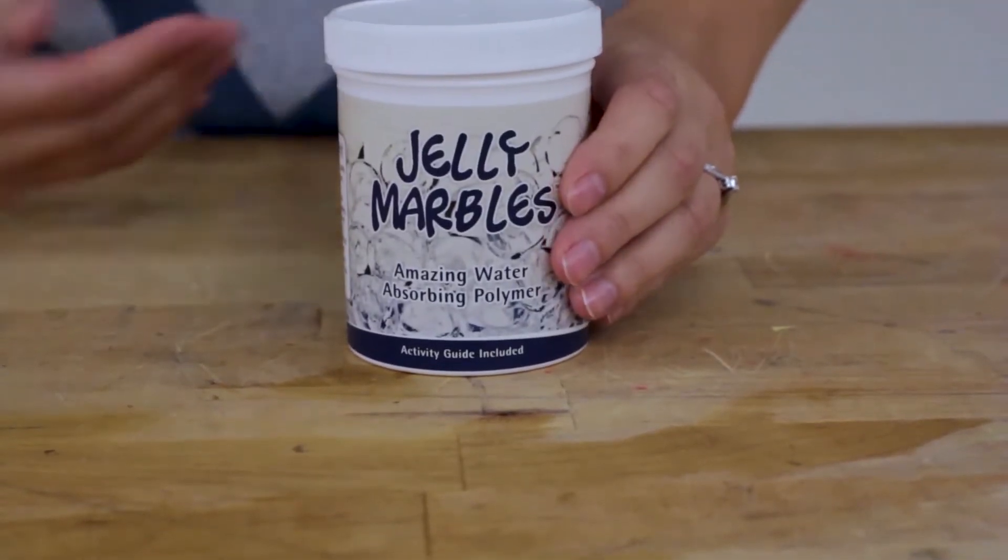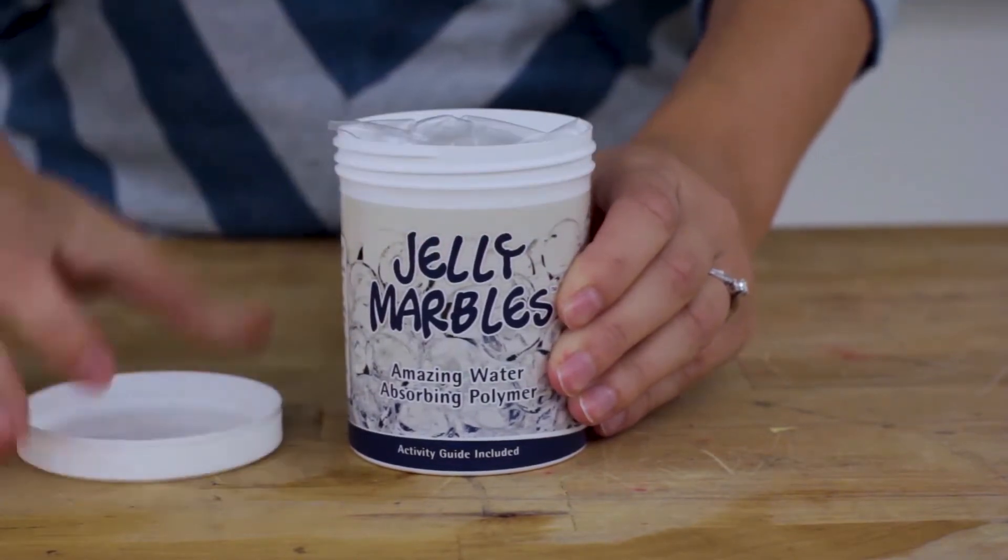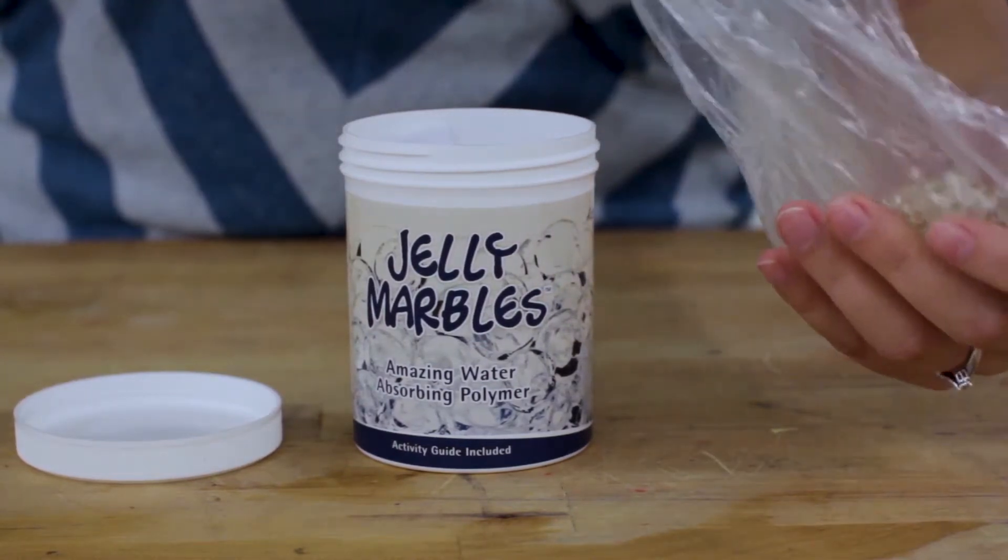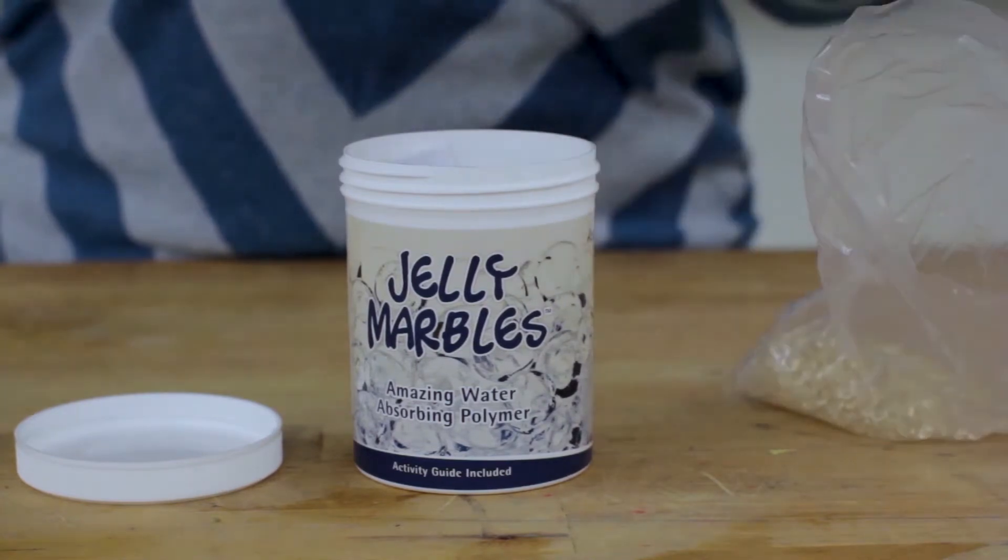Let's conclude our video by looking at examples of a classic refraction demonstration, making things disappear by matching the index of refraction. There are a number of products that have an index of refraction very close to water. Jelly marbles available on Steve Spengler's website for example.